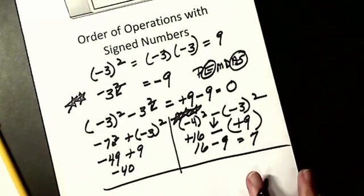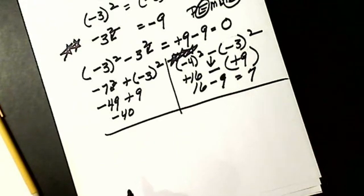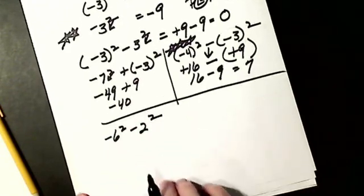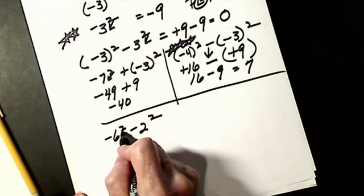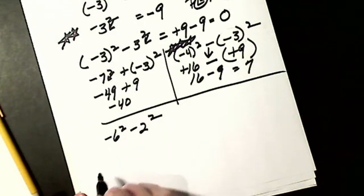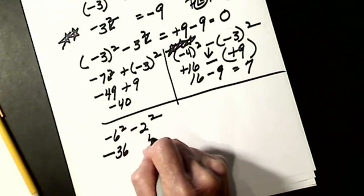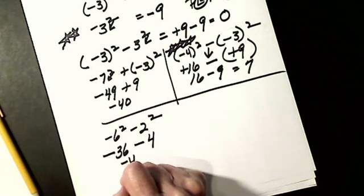Let's do another: negative 6 squared minus negative 2 squared. This is the exception — the square just refers to the 6, so I get 36; copy over the negative. 2 squared is 4; copy over the negative. Signs are alike: add and take the same sign.